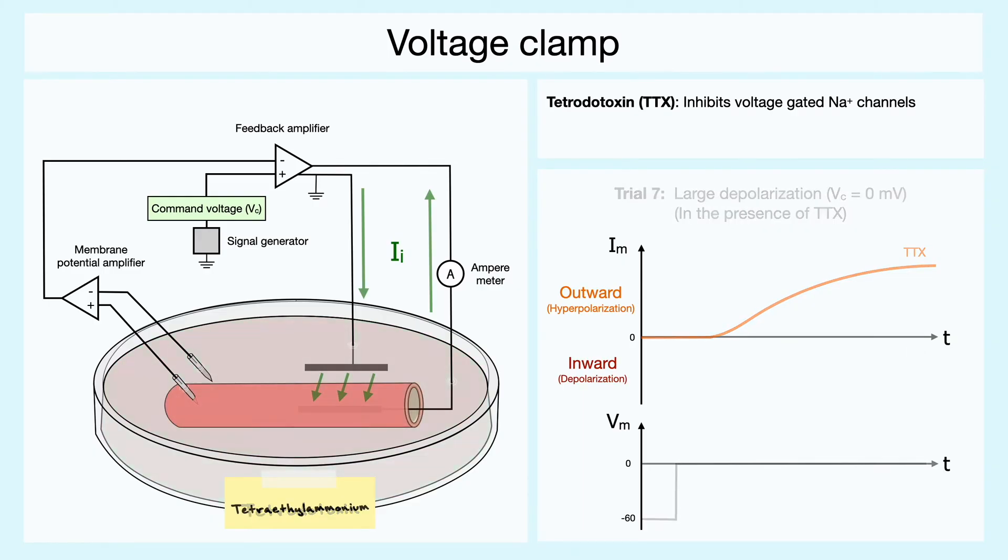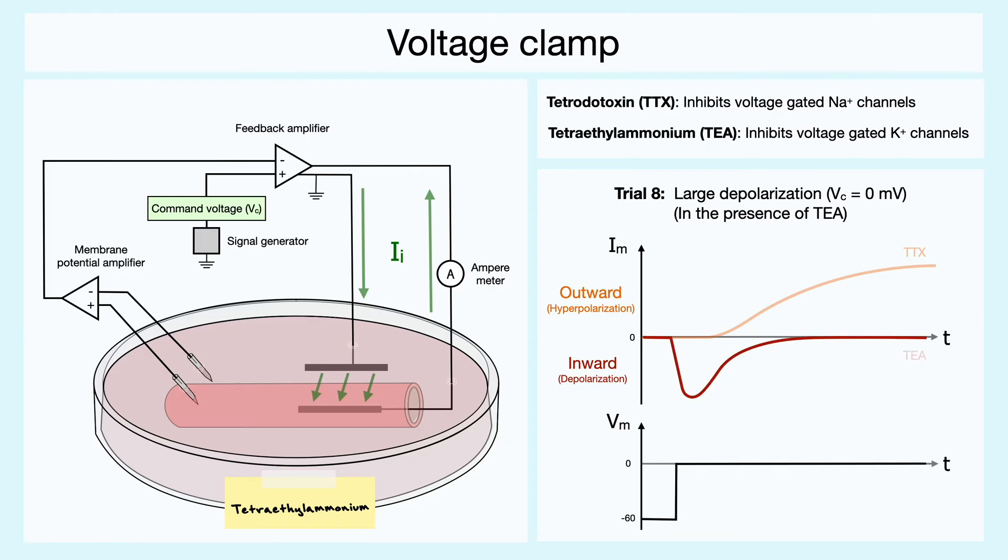Alright, in another trial, when one uses tetraethyl ammonium, a drug that inhibits the voltage-gated potassium channels, the recordings show only an early inward current, which we know sodium is responsible for. Thus, we can deduce from these results that potassium is indeed responsible for the outward current.